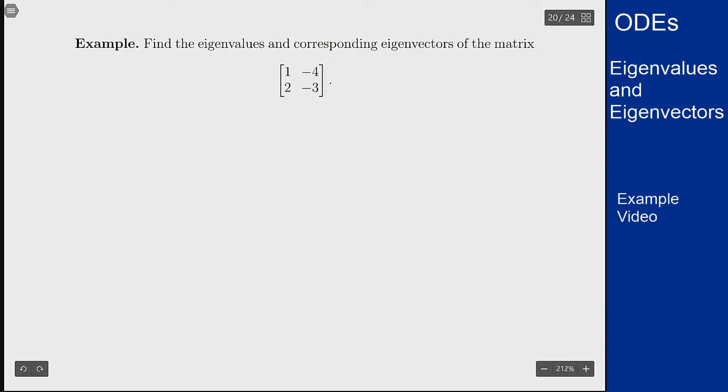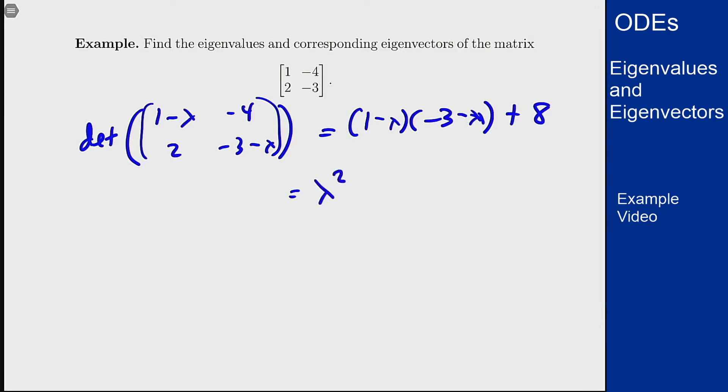With the eigenvalues we can get the determinant of A minus lambda I, so 1 minus lambda, minus 4, 2, minus 3 minus lambda, and the determinant is 1 minus lambda, minus 3 minus lambda, plus 8. We can expand this out: lambda squared plus 3 lambda minus 1 lambda plus 2 lambda, then minus 3 plus 8 is lambda squared plus 2 lambda plus 5.